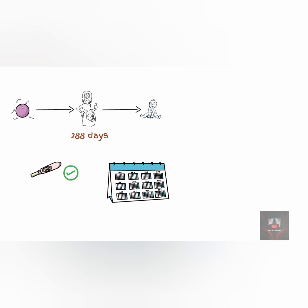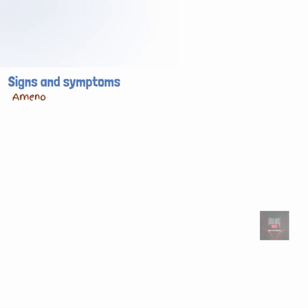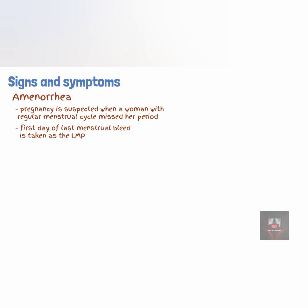The most commonly reported symptom of pregnancy is cessation of menses. Pregnancy is highly likely if 10 or more days have passed from the time of expected menses in a woman who previously had regular menstrual cycles. Most times women suspect they are pregnant when they notice they missed their period. In fact, pregnancy is the most common cause of secondary amenorrhea in women of reproductive age group. The first day of the last menstrual bleeding before the missed period is taken as the last menstrual period (LMP). This can be used to calculate the estimated gestational age of the fetus and the expected delivery date.